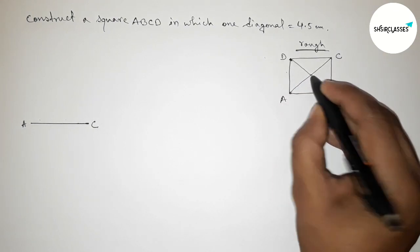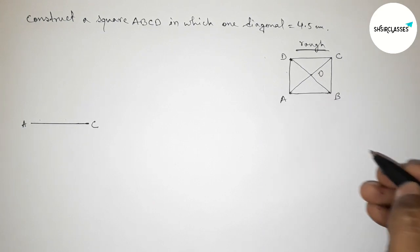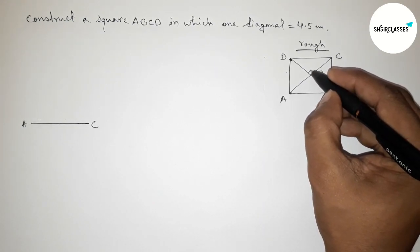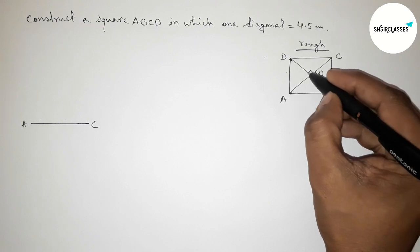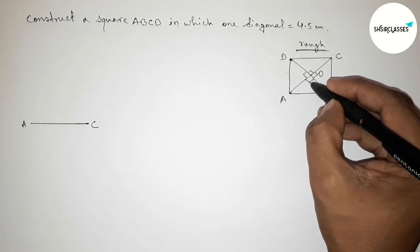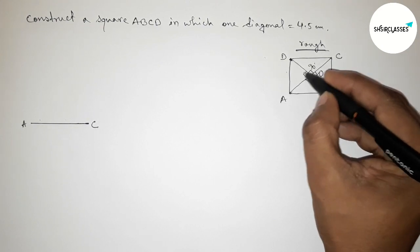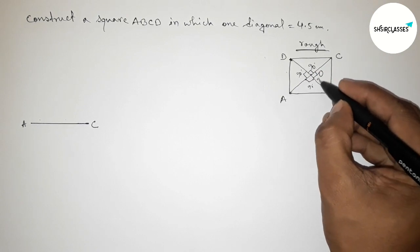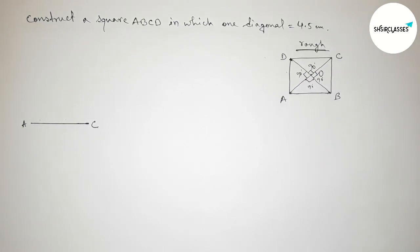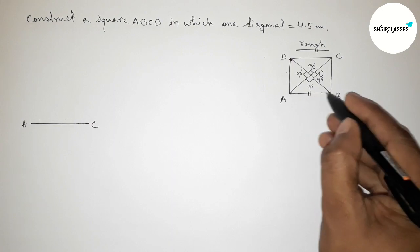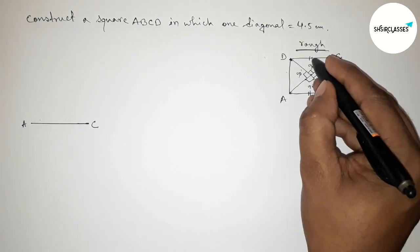We know that here the both diagonals intersect here at a point O and all the angles must be 90 degrees because both the diagonals bisect each other perpendicularly. And also we know that all the sides are equal.